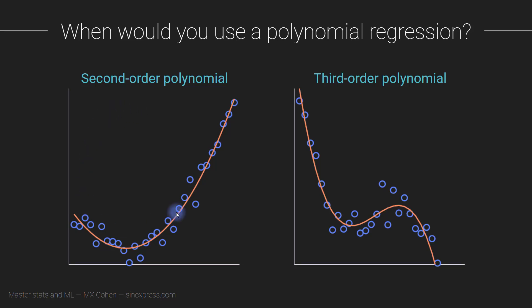Here you see two examples. This shows you when you would use a polynomial regression. Here we have our data, the blue circles are the data. You can see that a line is not going to be a really great fit to this data set.